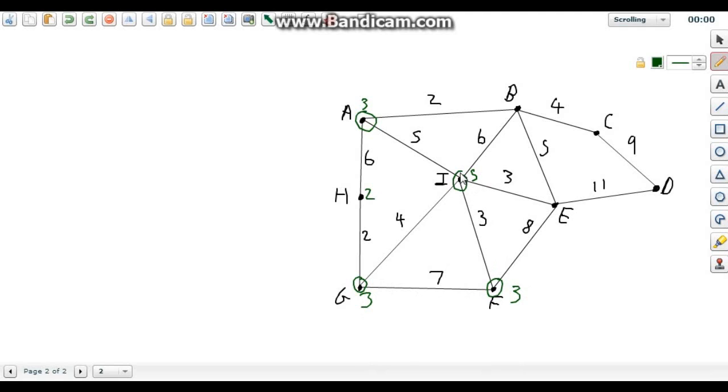One, two, three, four, five, it's odd. Four, it's even. Four, it's even. Two and two. So the odd order nodes here are A, G, F and I.